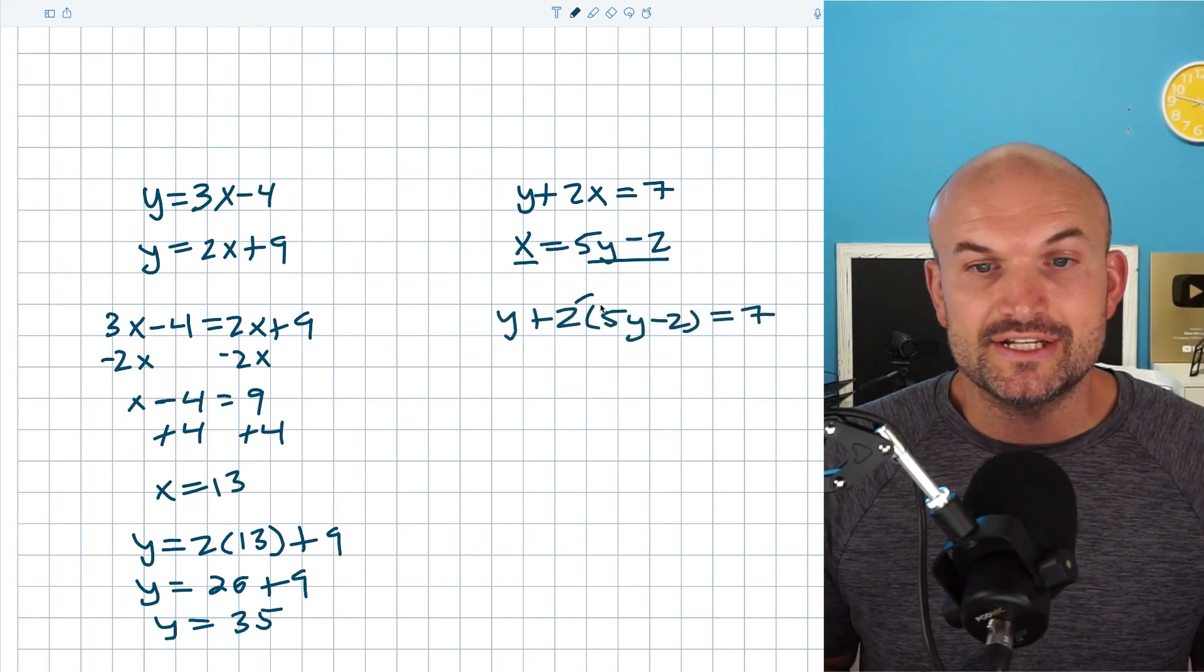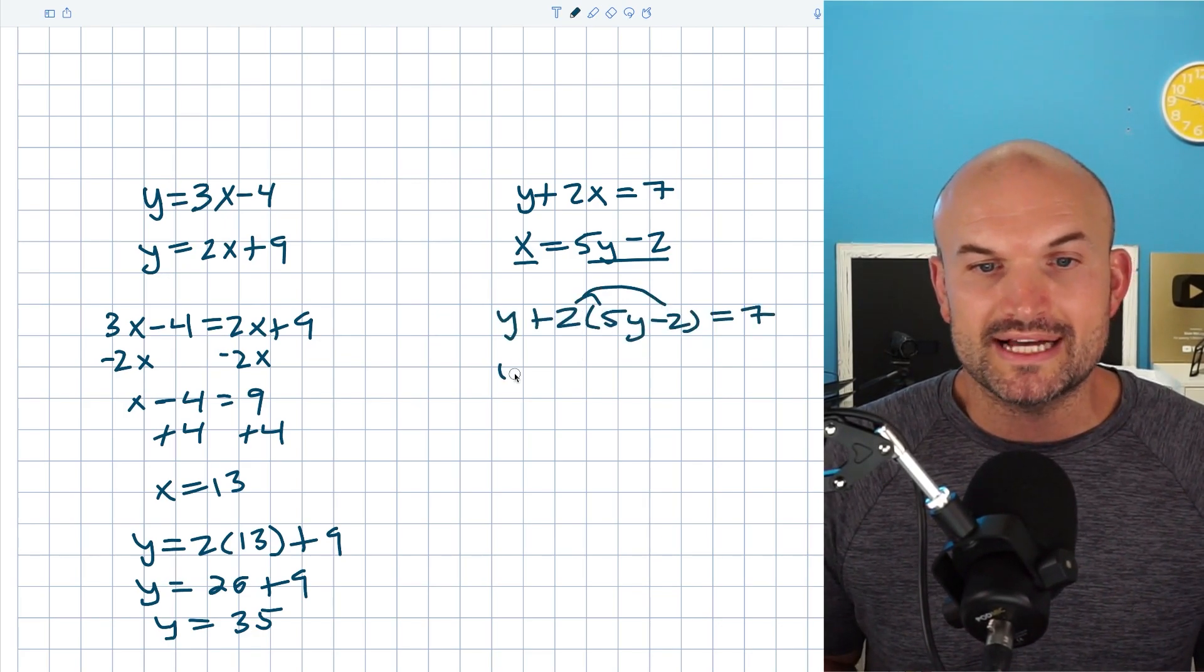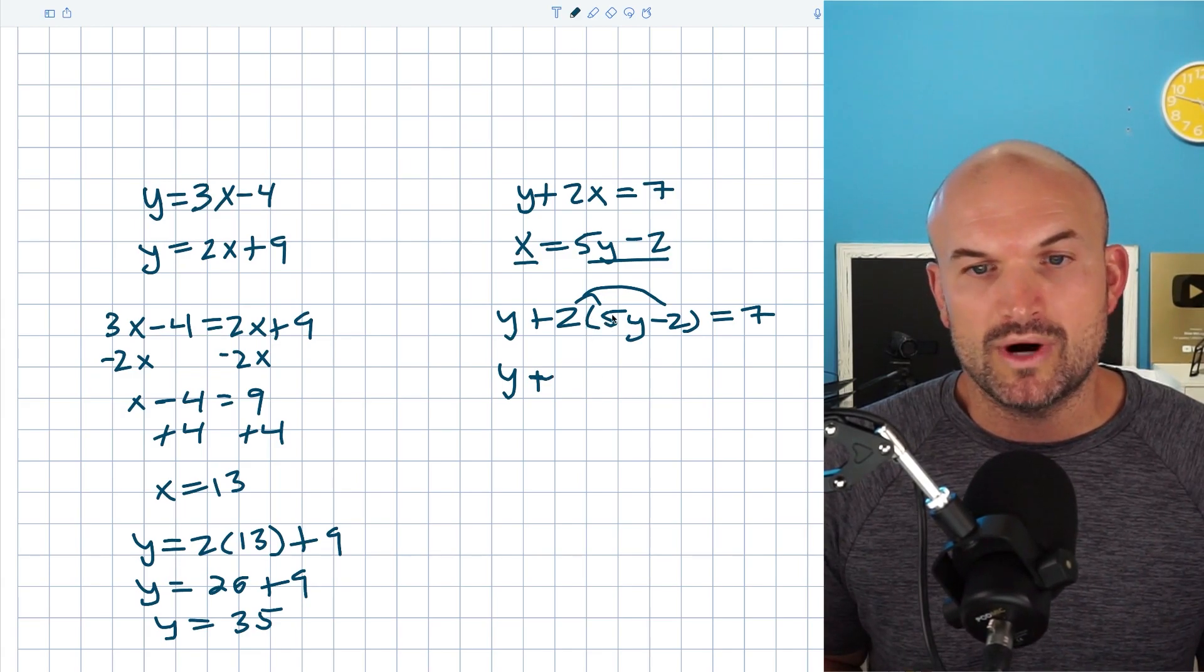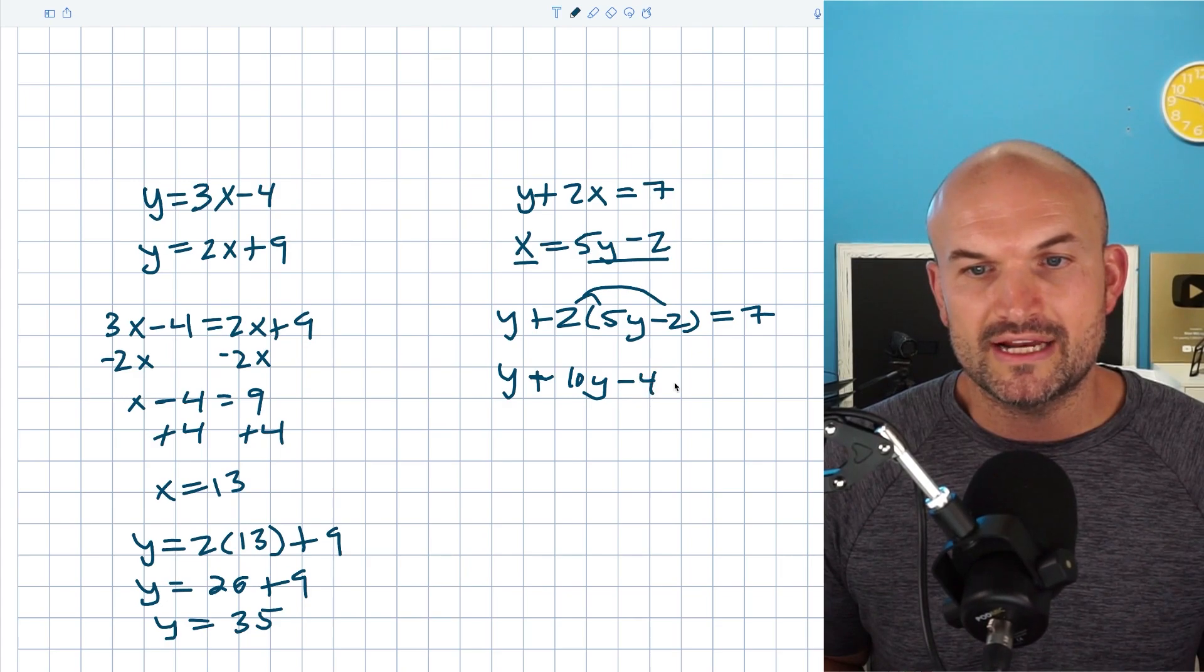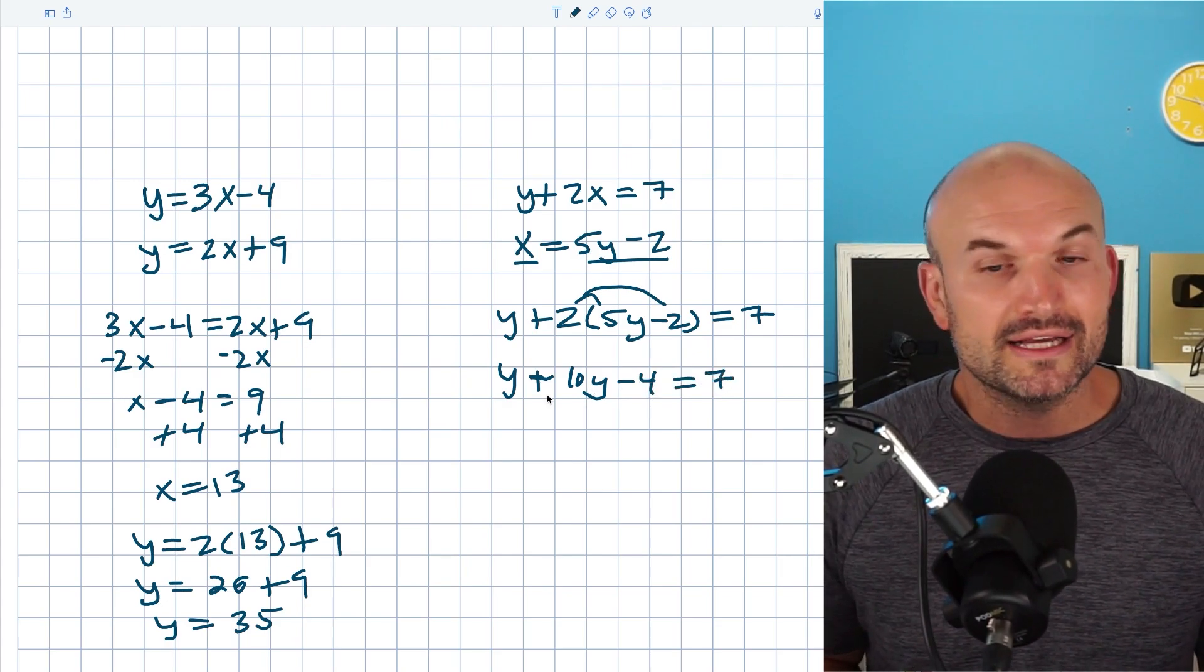Okay. Now to get rid of my parentheses, I just need to go ahead and apply my operation. So I'm going to apply the distributive property. And when I do that, I'm going to get y times 5y, which is going to be 10y and 2 times negative 2 is going to be negative 4, which is going to equal 7. Now I can combine my like terms.